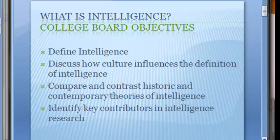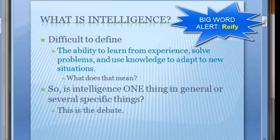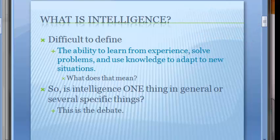Not just the theories, but the people who put forth those theories. Intelligence is challenging to define because what we're trying to do is reify intelligence, meaning we're trying to take something that's abstract and treat it as if it were a concrete thing. And intelligence is not necessarily a concrete thing — we try to make it that way.